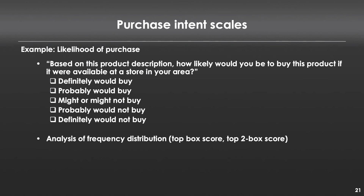Another incredibly common scale is the purchase intention scale. It might look something like: 'Based on the product description, how likely would you be to buy this product if it were available at a store in your area?' — definitely would buy, probably would buy, might not buy, probably would not buy, definitely would not buy. This question has been used so many times in so many different contexts that it's actually very well calibrated to translate into actual purchase behavior. Folks who say 'definitely would buy' — about 80% of them actually would buy. Of the people who say 'probably would buy,' about 30% of them will actually buy. Anybody who responds basically any other way is unlikely to buy at all.